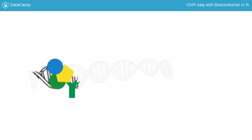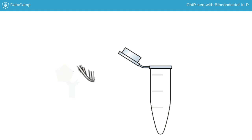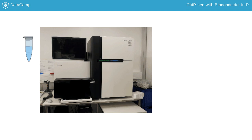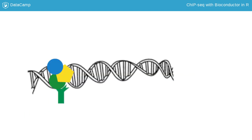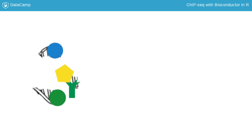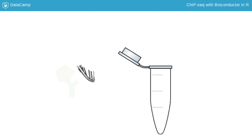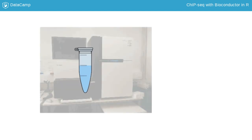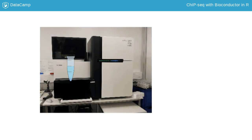ChIP, short for chromatin immunoprecipitation, is a technique that can be used to extract specific proteins together with any part of the genome they were bound to from a cell. We can then use the DNA sequences attached to the proteins to infer the sites across the genome that they interact with, by identifying regions of the genome that are over-represented in the sequencing data.